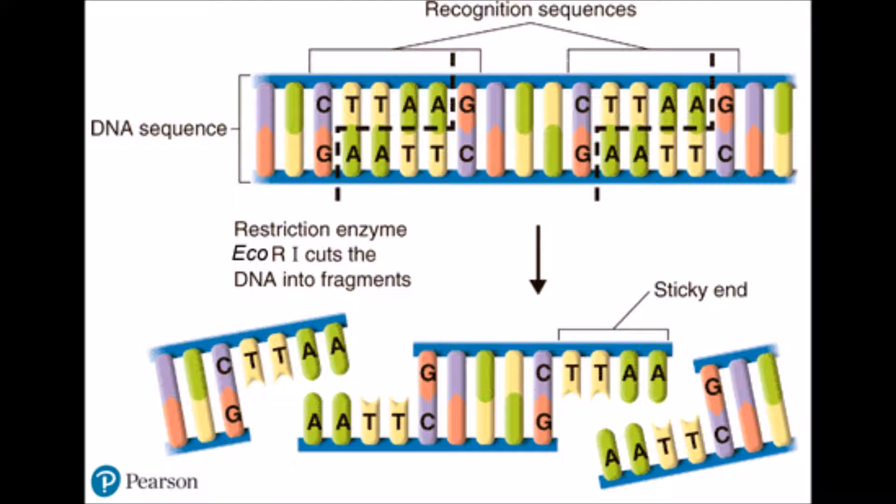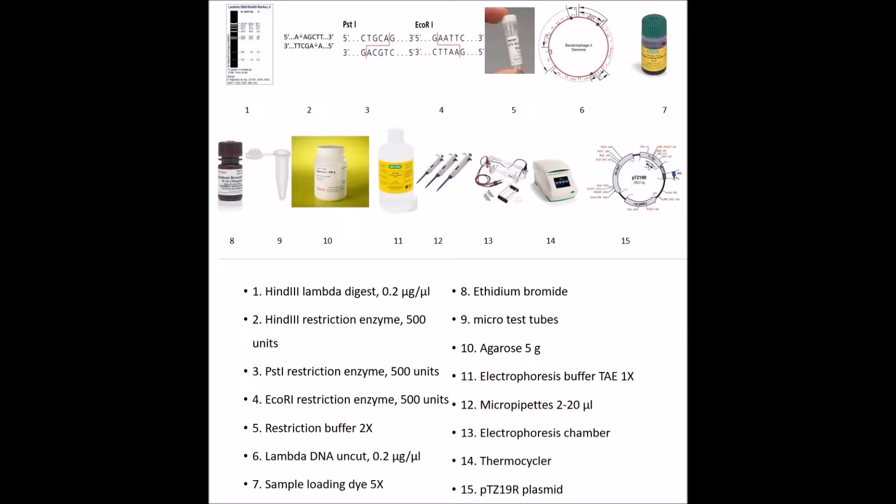And the results will be analyzed using electrophoresis. The materials for this practice are the following: the restriction enzymes HindIII, PstI, and EcoRI, the restriction buffer 2X, the lambda DNA which is uncut, the sample loading dye 5X, and ethidium bromide.